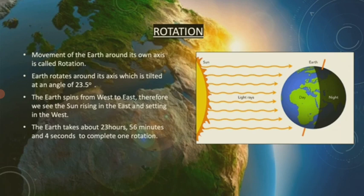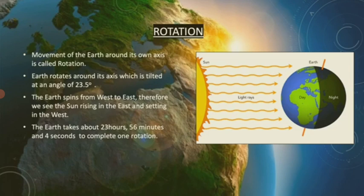The Earth spins from West to East, therefore we see the Sun rising in the East and setting in the West. The Earth takes 24 hours to complete one rotation, but to be specific, it actually takes 23 hours, 56 minutes and 4 seconds to complete one rotation.